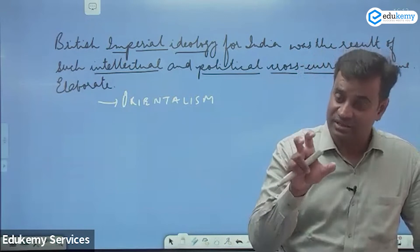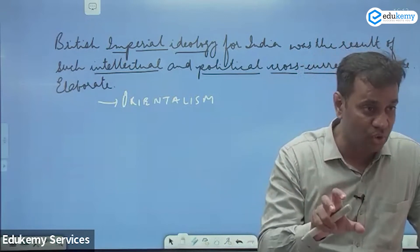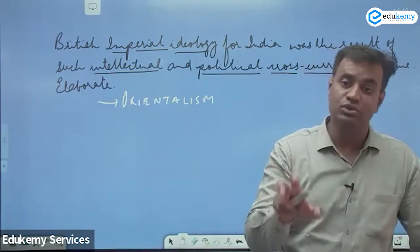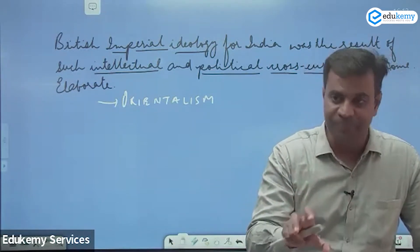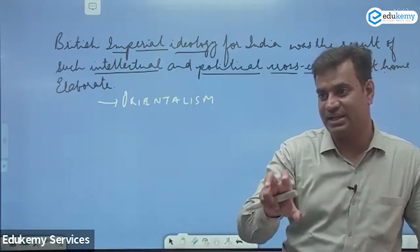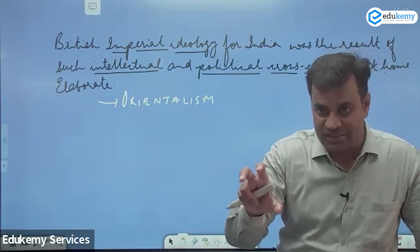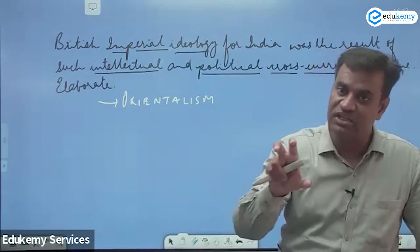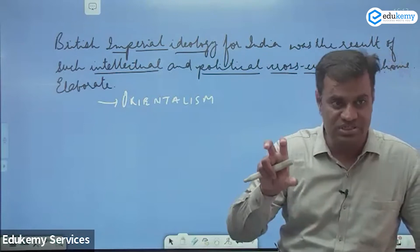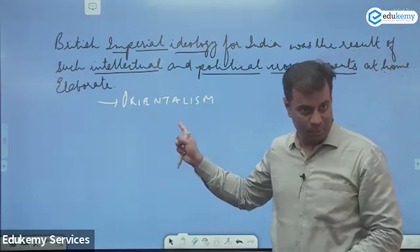They translated a large number of religious texts like the Bhagavad Gita into English — Charles Wilkins translated it — to know about Indian culture. They established institutions suited to Indian requirements: Kolkata Madarsa in 1781, Sanskrit College at Banaras in 1791. All these indicate the Oriental approach.